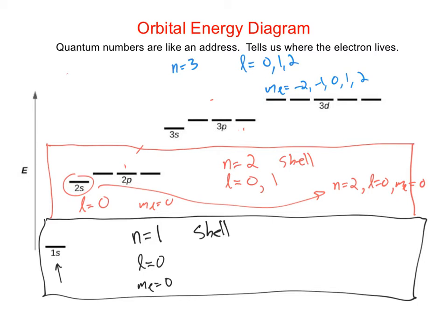If we go on to n equals four, L can be zero, one, two, or three. So we have S, P, D orbitals, and now when L equals three we have F orbitals. When L equals three, the possible values of M sub L are negative three, negative two, negative one, zero, one, two, and three — so in any F subshell there are seven orbitals.